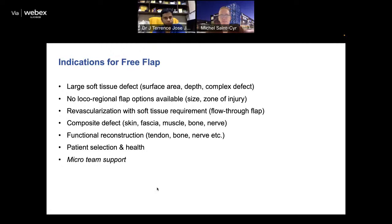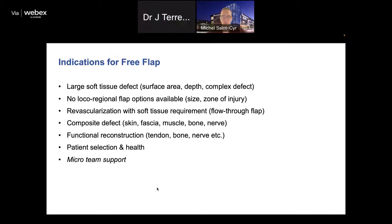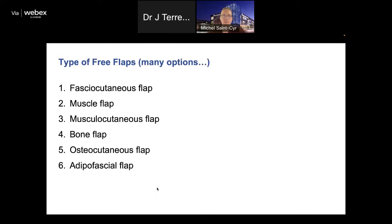Things to consider: indications — revascularization when there's no local options available for coverage, functional reconstruction when you're reconstructing nerve, bone, tendons. Patient selection and health are really important. Some patients are not candidates for free flaps. Having the right micro team is critical. If you don't have the right setup, it's probably not a good idea to do micro, at least not yet. There are a lot of options for free flap reconstruction — skin flaps, muscle flaps, bone flaps, adipofascial flaps — it really depends on your reconstructive goals.